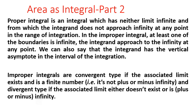In the improper integral, at least one of the boundaries is infinite, or the integral approaches infinity at some point — meaning the integral has a vertical asymptote in the interval of integration. Improper integrals are convergent if the associated limit exists and is a finite number, and divergent if the associated limit either does not exist or is infinity.